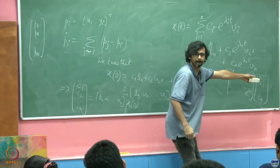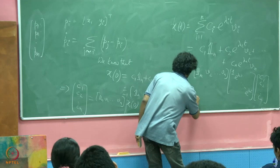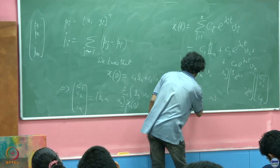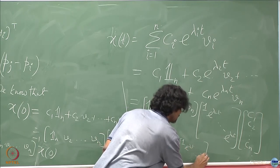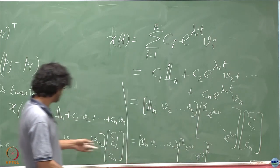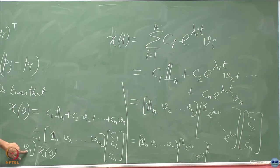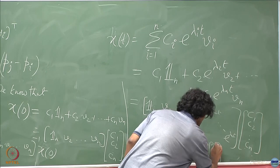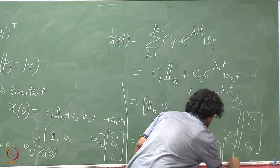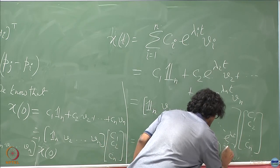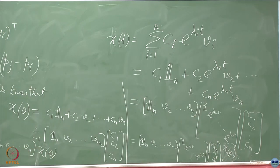We know that X_0 equals C_1 all ones plus C_2 V_2 plus dot dot dot till C_n V_n, which is nothing but [all ones, V_2, ..., V_n] followed by [C_1, C_2, ..., C_n], which means that [C_1, C_2, until C_n] is nothing but [all ones, V_2, ..., V_n]. What I am doing here is very standard, I am not using any property of the Laplacian. This is just standard for any matrix. Here I just happen to know that this is all ones, you could have just replaced this with v_1. This result is very generic: inverse times x_0. x_0 is a vector. So I might as well replace this here.